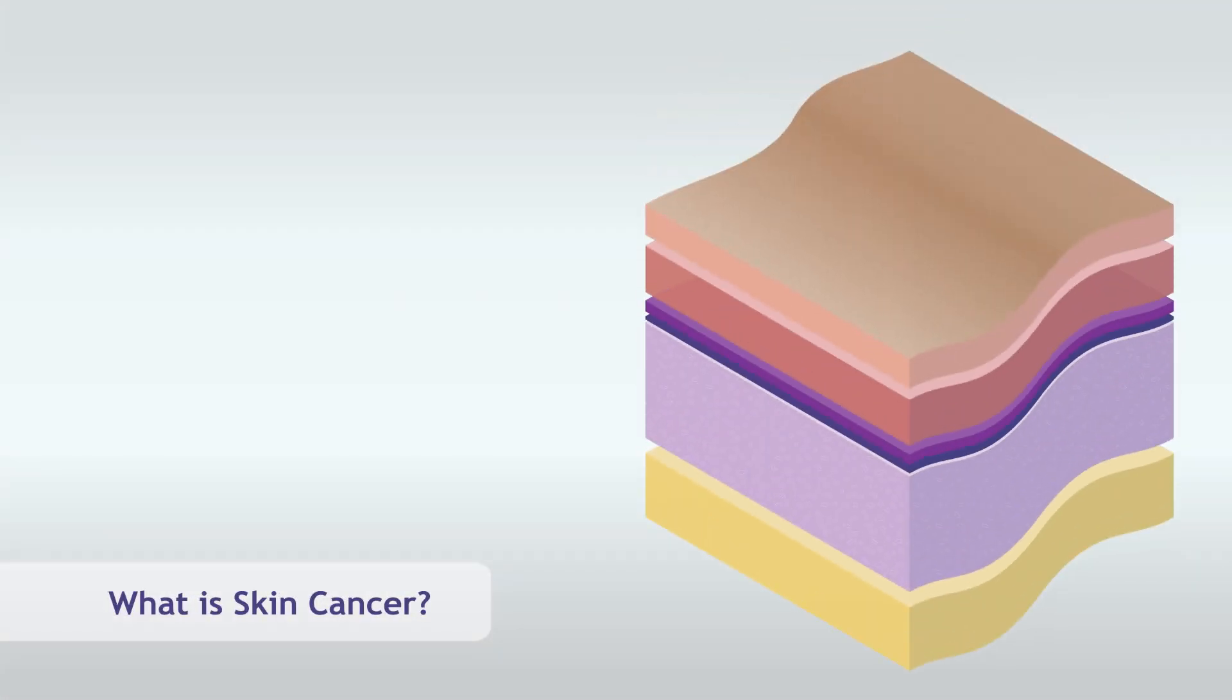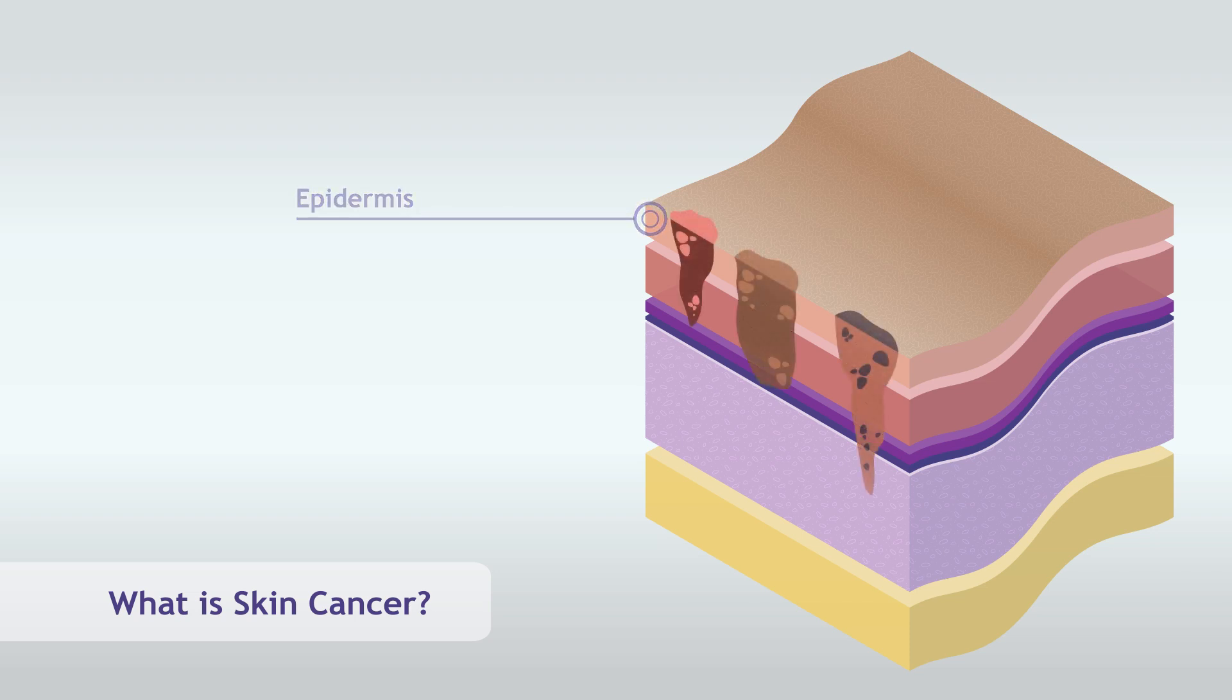What is skin cancer? Skin cancer occurs when abnormal cells in the epidermis, the uppermost layer of the skin, grow out of control.